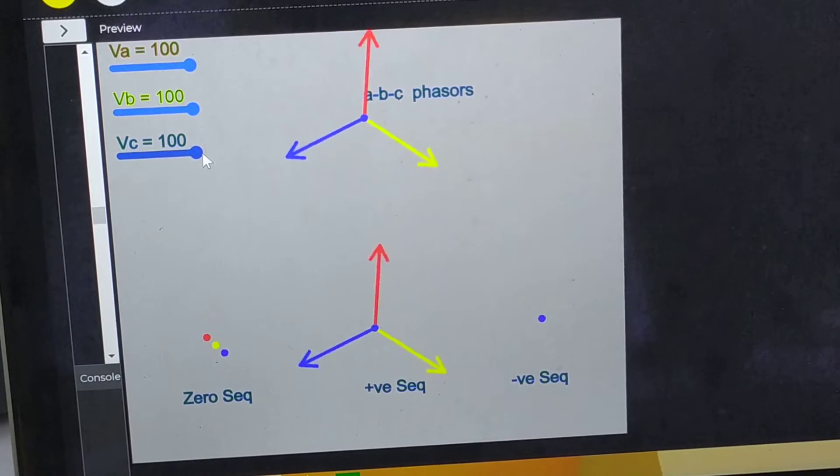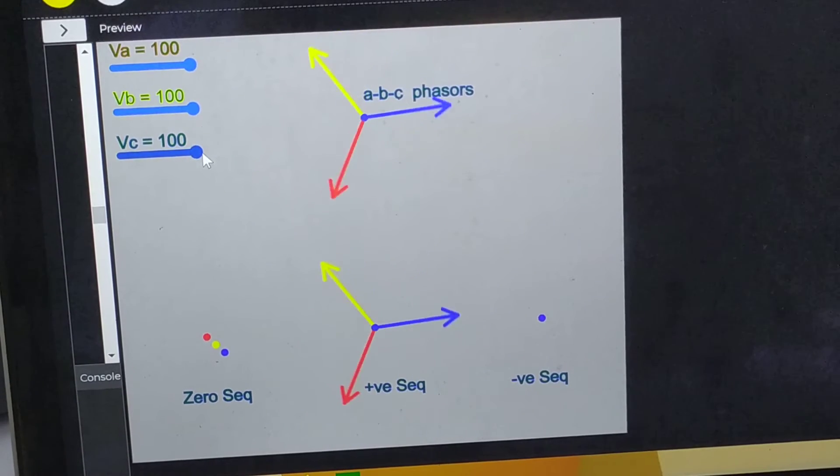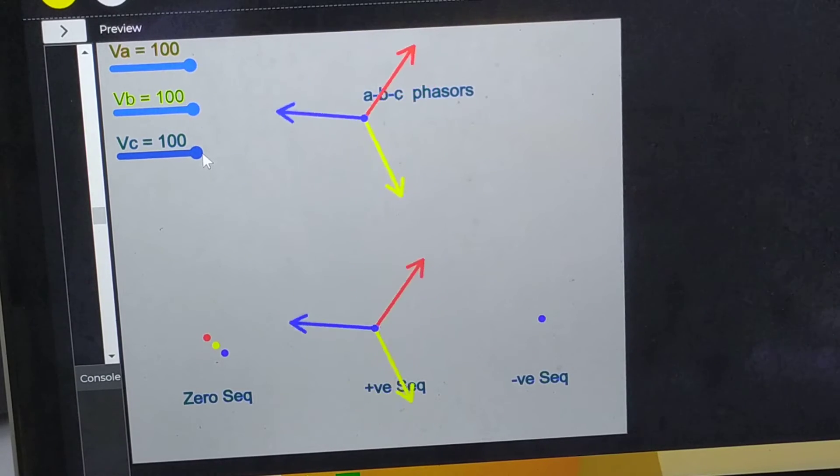So naturally, there is neither negative sequence component nor zero sequence component. Whatever is, is the positive sequence component. So the ABC phasors Va, Vb, Vc are exactly same as Va1, Vb1 and Vc1.